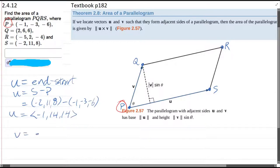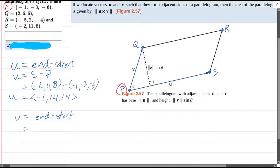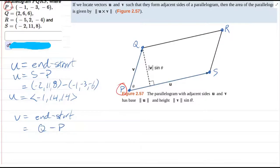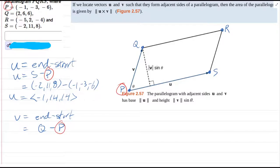Now v is also end minus start. Now that end is Q and start is P. So this is super important here that we're using the same starting point. Very, very important.